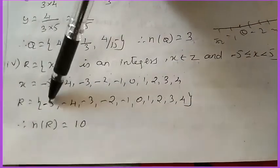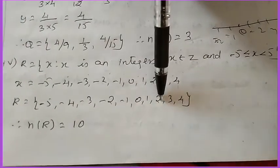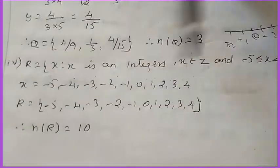Just write it here and then count: 1, 2, 3, 4, 5, 6, 7, 8, 9, 10. There are 10 numbers. Therefore, cardinal set n of R is equal to 10. That's all.